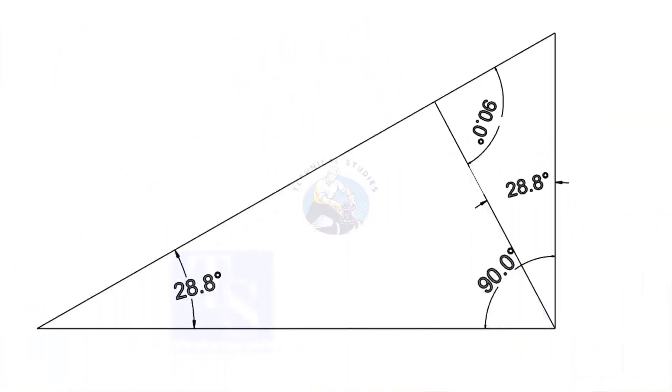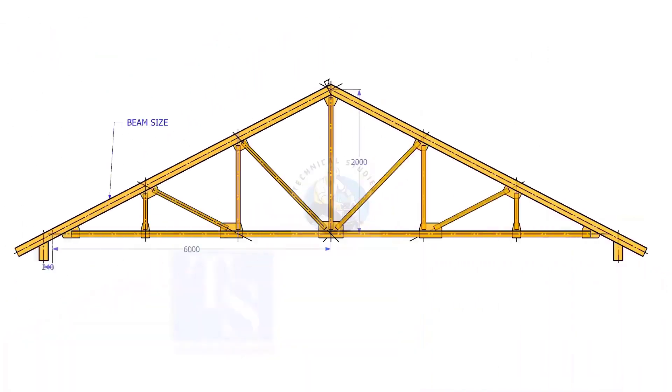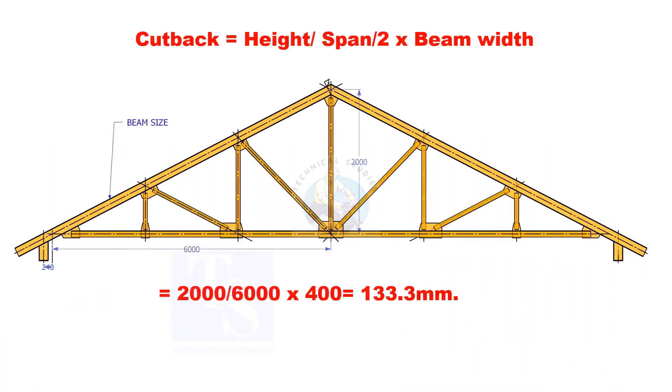Basically the formula is based on the theory, opposite angles are equal. Here, the cutback is truss height divided by half span multiplied by the actual width of the girder.